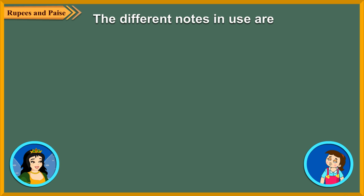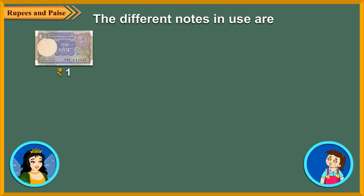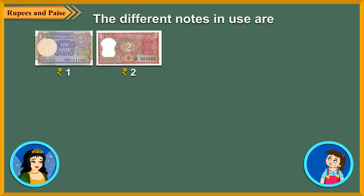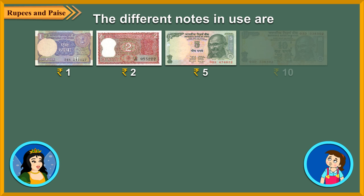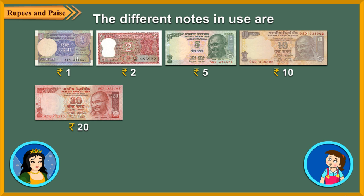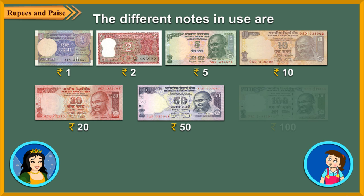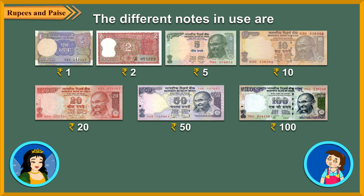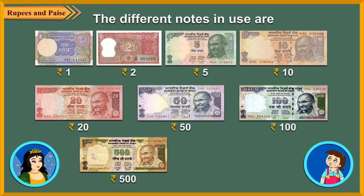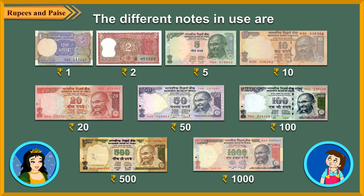The different notes in use are 1 Rupee, 2 Rupees, 5 Rupees, 10 Rupees, 20 Rupees, 50 Rupees, 100 Rupees, 200 Rupees, 500 Rupees and 1,000 Rupees.